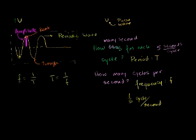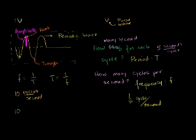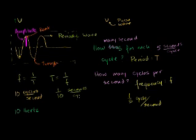If I'm vibrating the left end of this rope at 10 cycles per second — and by the way, cycles per second is measured in hertz, so that's 10 hertz — then my period is 1 over 10 seconds per cycle. This makes sense: if I can complete a full up-down-back-again cycle 10 times in a second, it takes me one-tenth of a second each time.